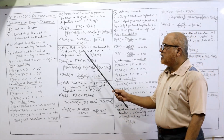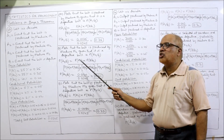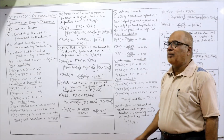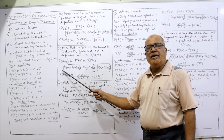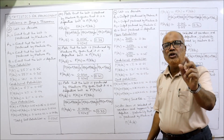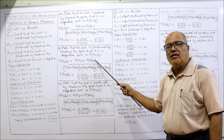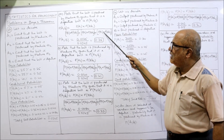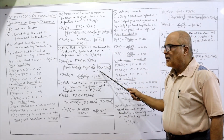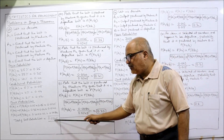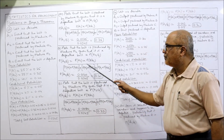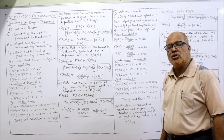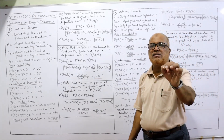Second question: what is the probability that the bolt is produced by machine M2 given that it is a defective bolt? P(A2|B) = P(A2)·P(B|A2) divided by the sum of all joint probabilities. Numerator is 0.0140, denominator is 0.0345. So 0.0140 ÷ 0.0345 = 0.41. The probability that the defective bolt comes from M2 is 0.41.